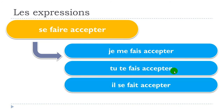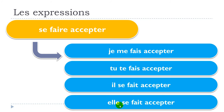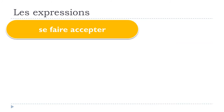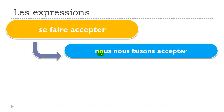Then for the second person: 'tu te fais accepter'. For the third person masculine: 'il se fait accepter', and the feminine: 'elle se fait accepter'. So keep in mind: je me, tu te, il se, elle se — then you conjugate your verb.